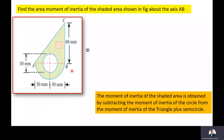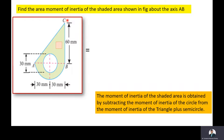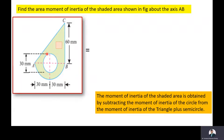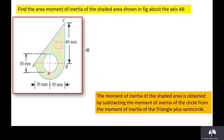We need to find the moment of inertia of the shaded region about the axis AB. For that, we will divide the total figure into three parts. The first part is triangle ABC. The second part is the semicircle below AB. The non-shaded region is the circle, and the moment of inertia of the circular region is to be subtracted from the summation of the triangle and semicircle.